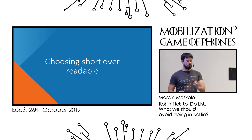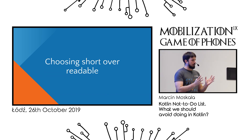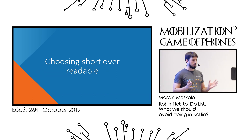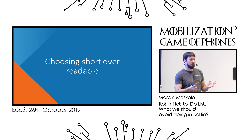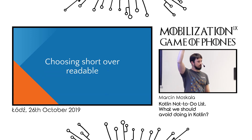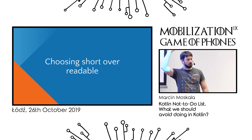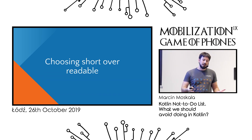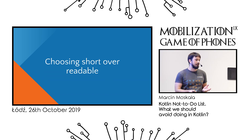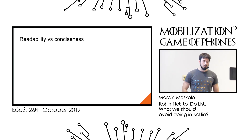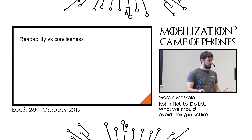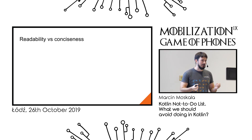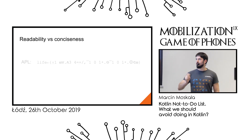The second big sin is choosing short over readable. There is a common misconception that Kotlin is designed to be short — it is concise, but it is not designed for brevity at all costs. Kotlin is designed to be readable. Consider the Game of Life: it took about 10-12 lines in Kotlin, but in APL it takes one line. Your first thought is 'wow, that's short,' and your second thought is 'I don't have half those characters on my keyboard.'